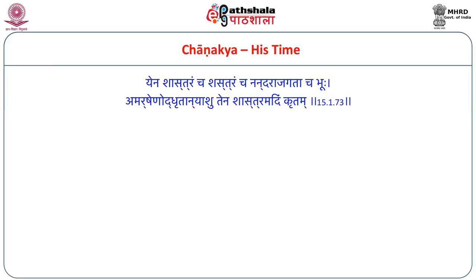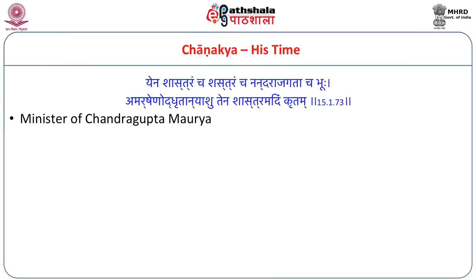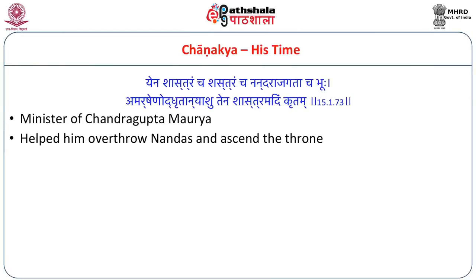The shloka reads: Yena Shastra'mcha Shastra'mcha, Nandarajagata cha Bhuhu, Amar-Shena Udhrutta, Tena Shastra-Vidham Krutam — meaning: by whom the shastra and the land occupied by Nanda were rescued instantaneously, by that Chanakya this shastra is written. So we know from this that he is the minister of Chandragupta Maurya, and that he helped him overthrow the Nandas and ascend the throne.